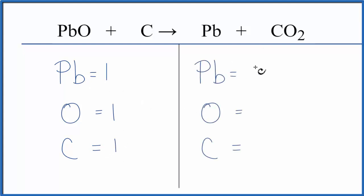On the product side, Pb, 1, oxygen, 2, and then carbon, 1.